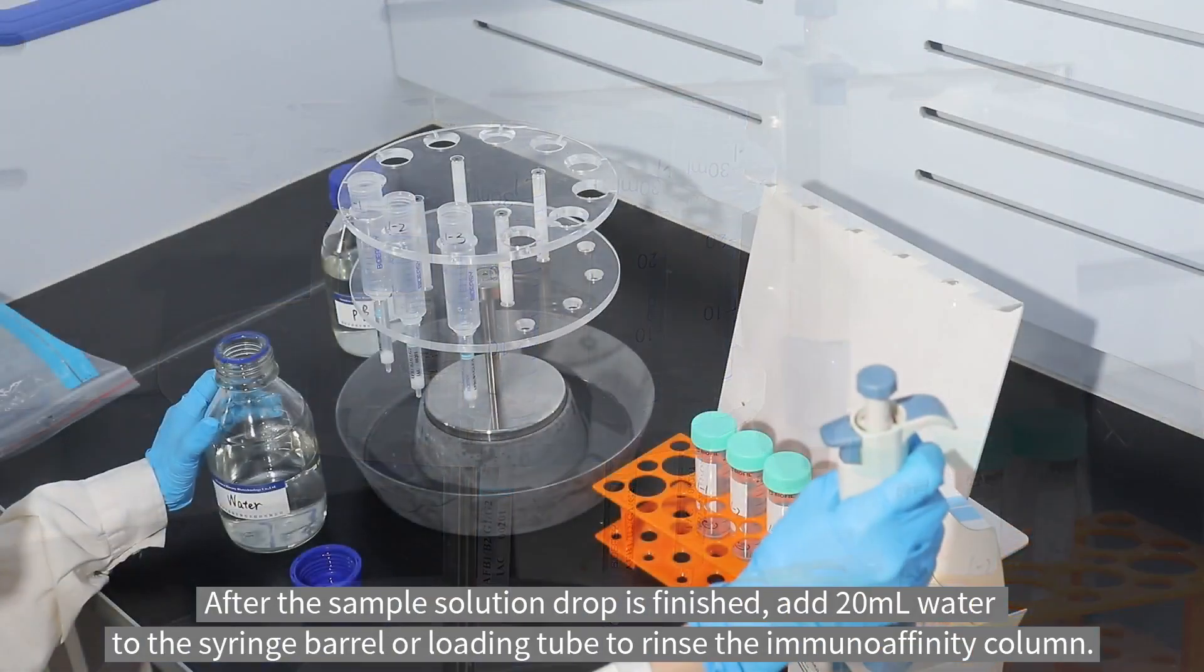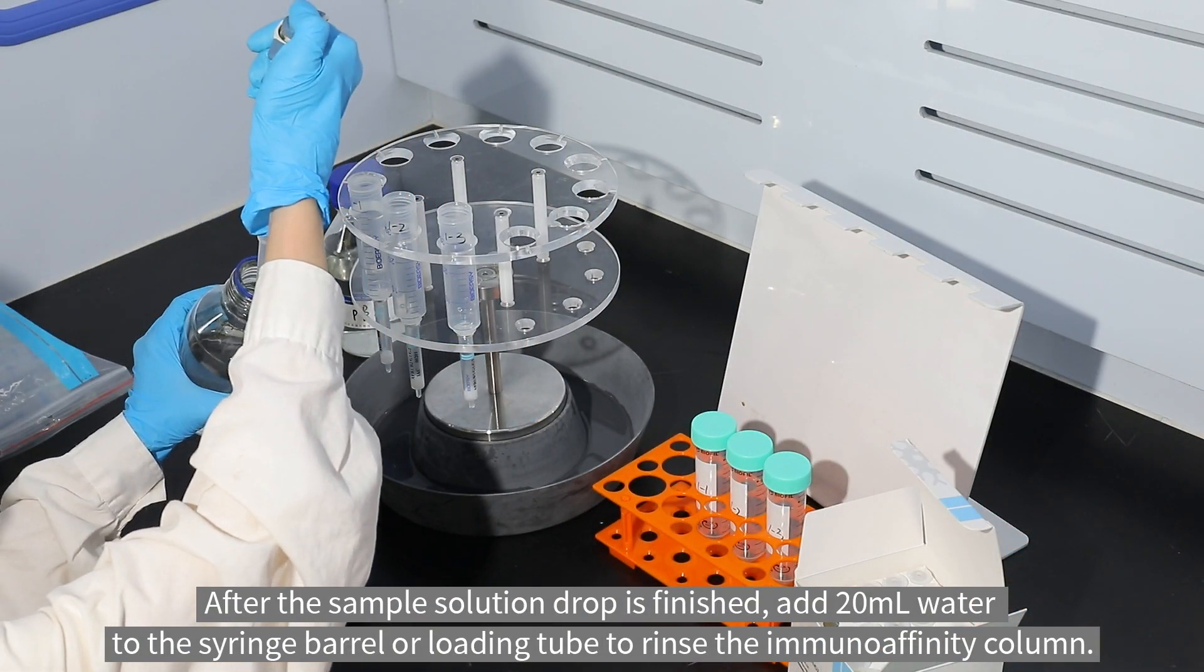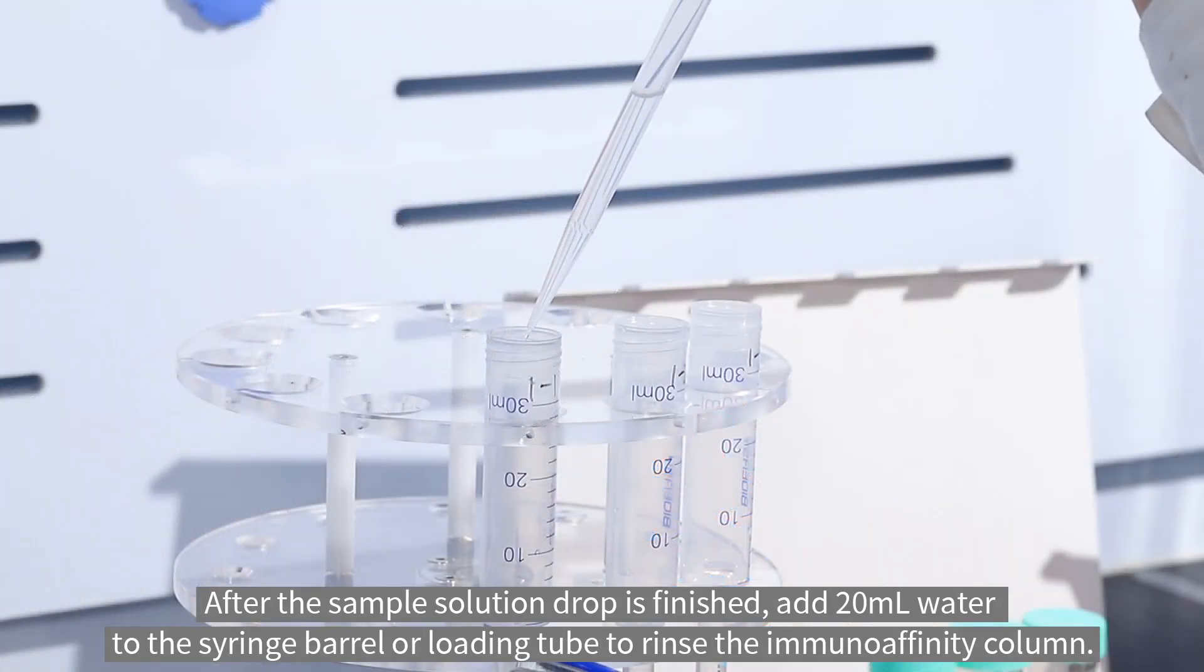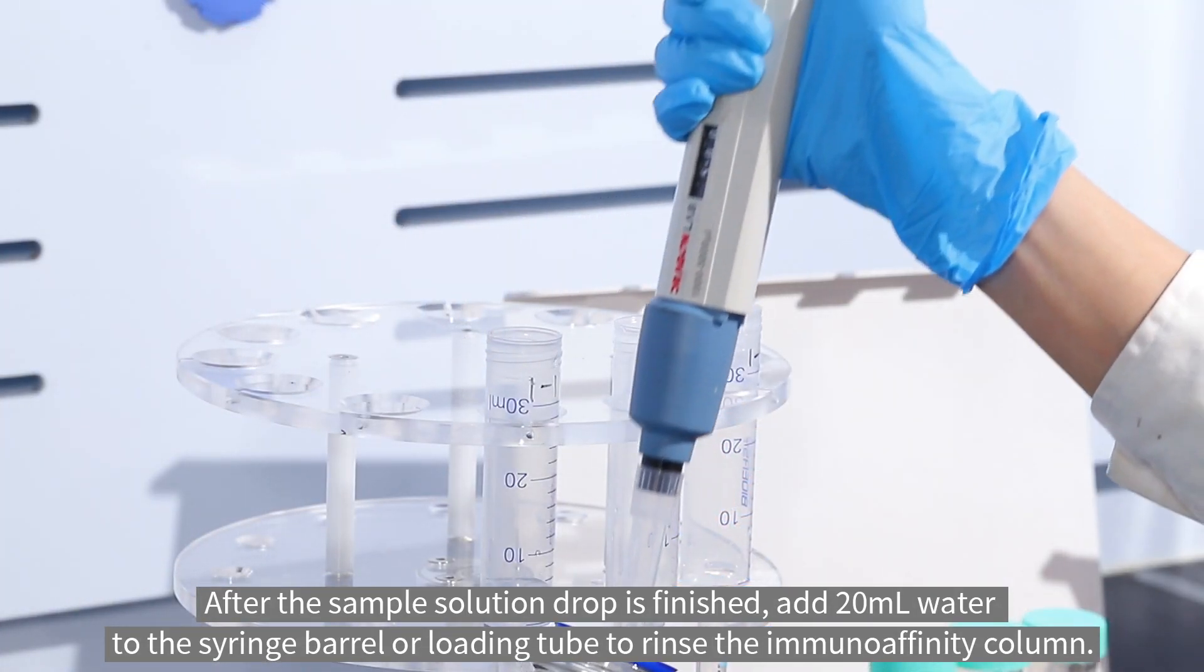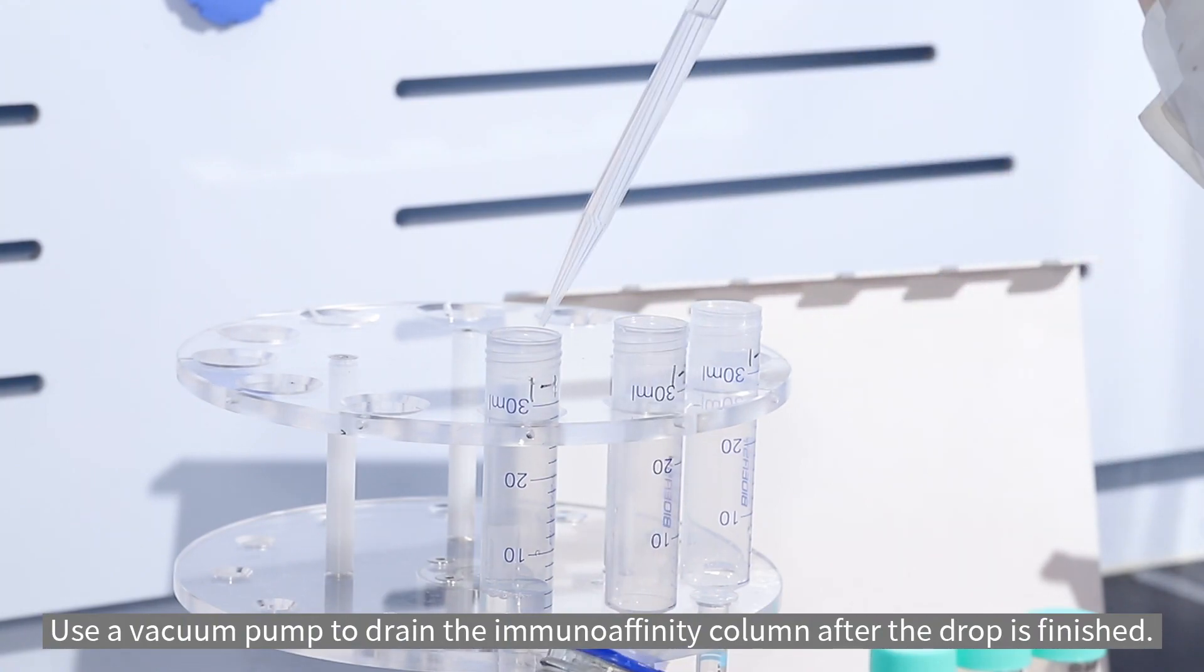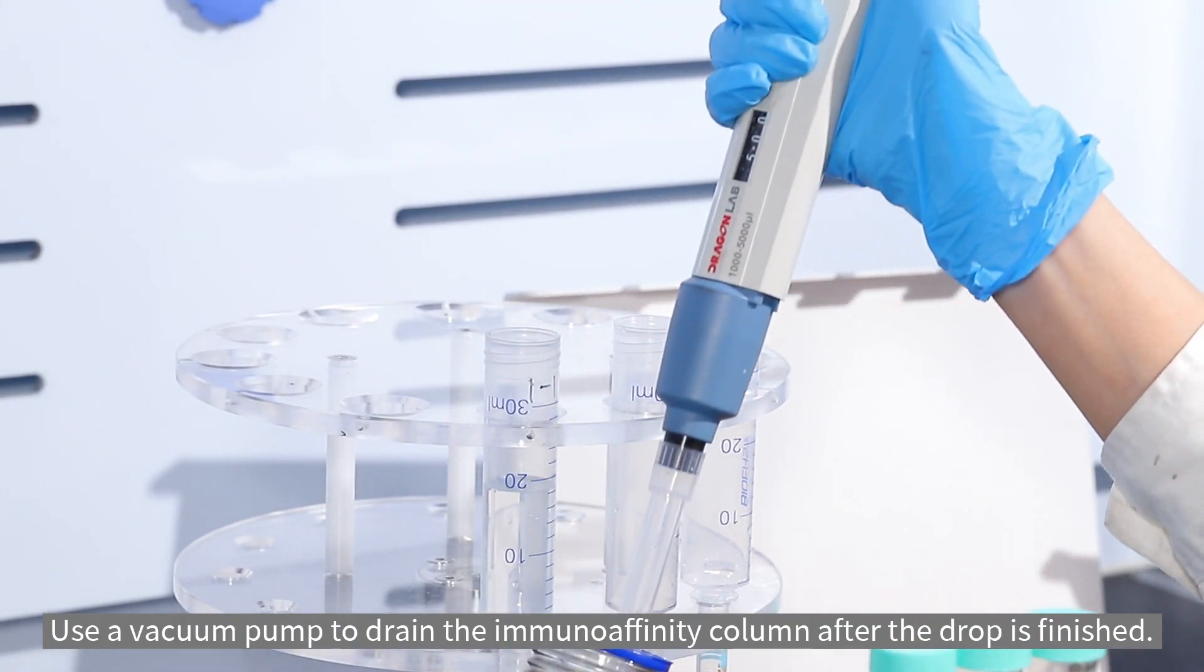After the sample solution drop is finished, add 20 milliliter water to the syringe barrel or loading tube to rinse the immunoaffinity column. Use a vacuum pump to drain the immunoaffinity column after the drop is finished.